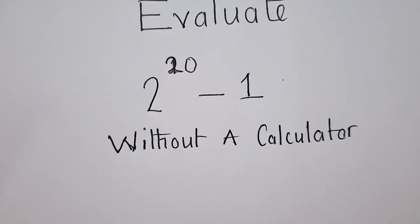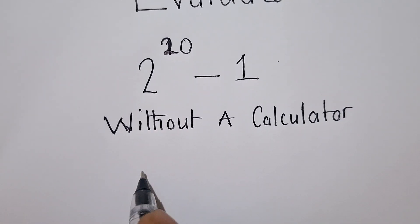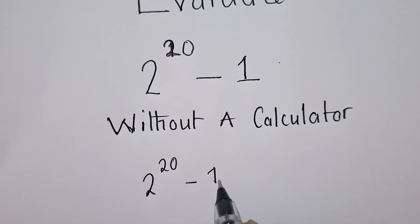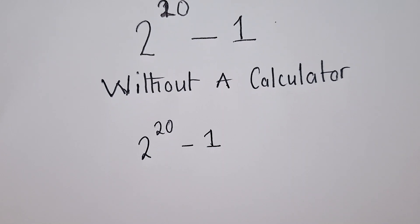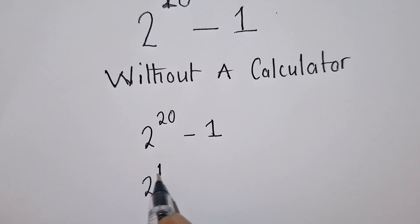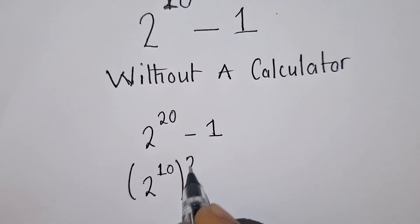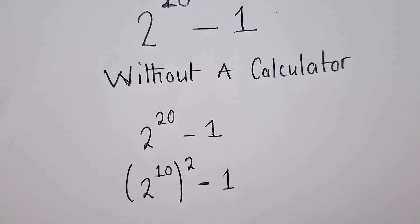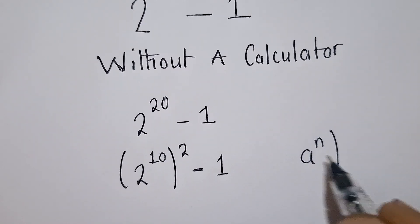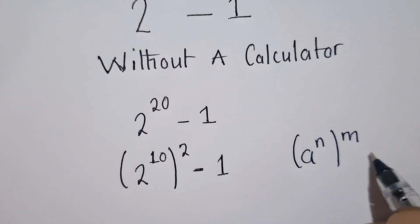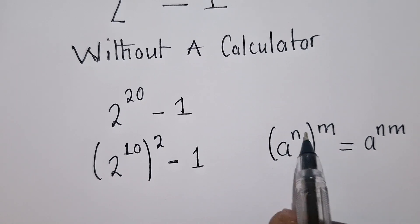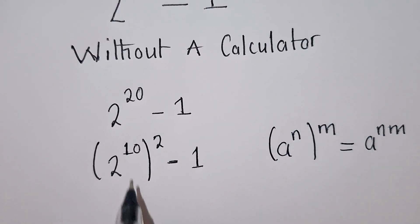Working out a question like this, we're going to write it as 2 power 20 minus 1. We can write this as 2 power 10, power 2, minus 1. Remember, using the property which says that when you've got a power to a power, you multiply — so a^(nm). You can separate using this property, and this is what we have.